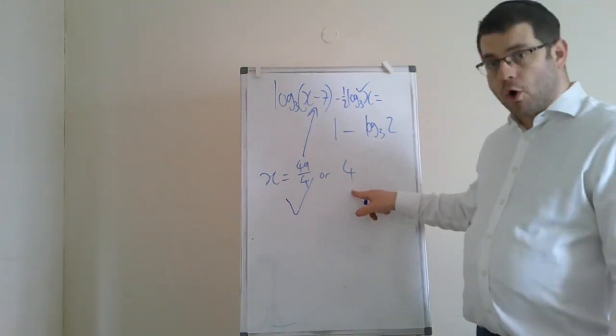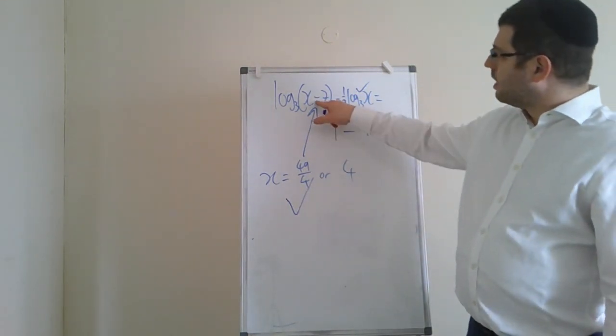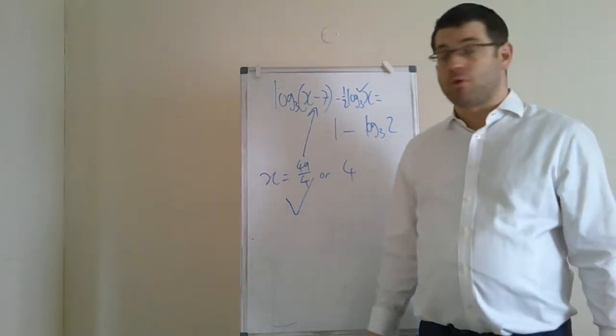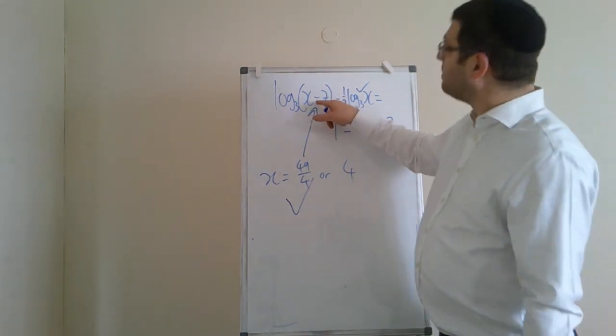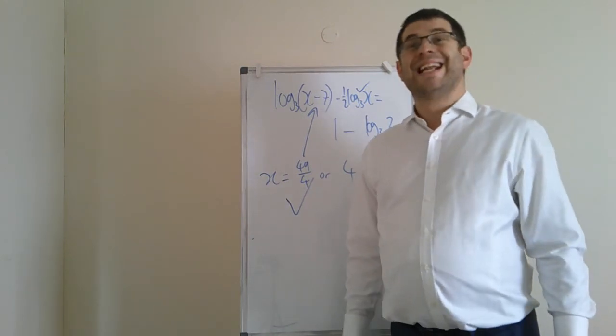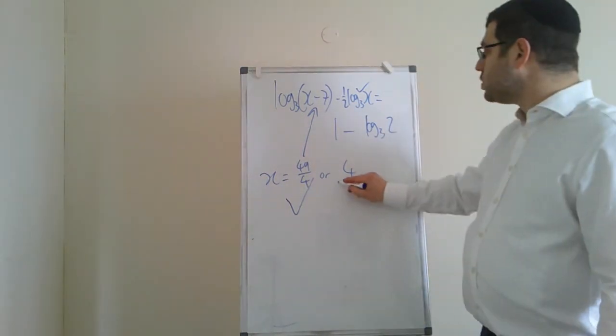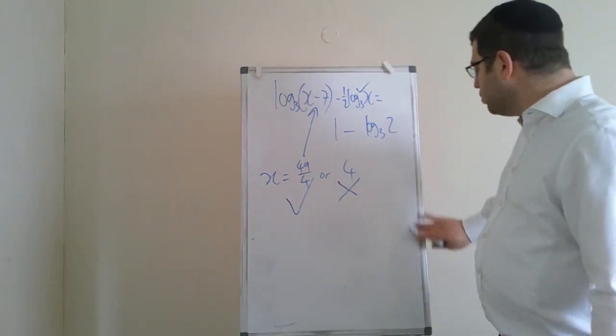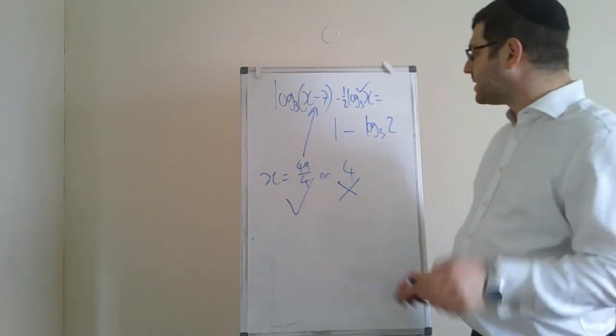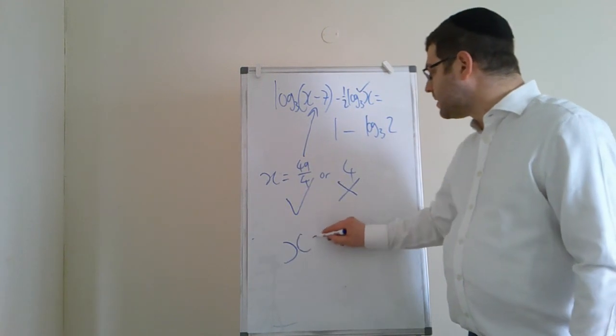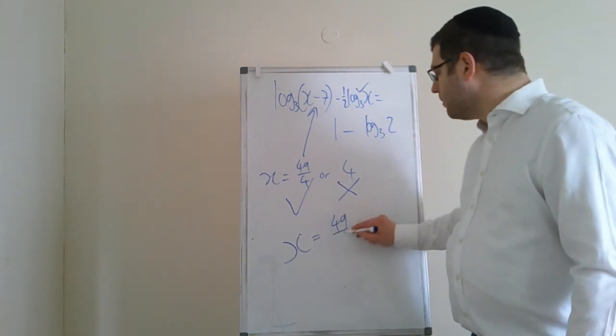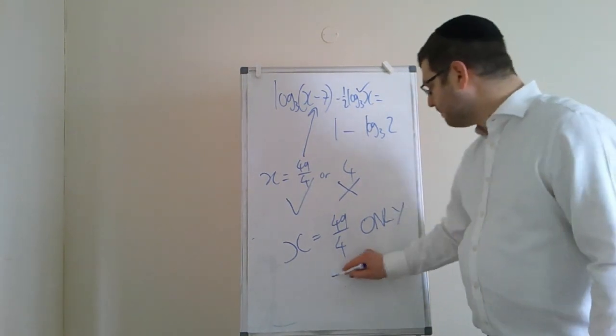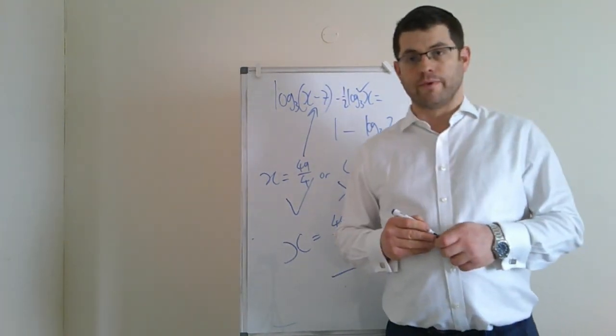However, when we put 4 in, it ends up being minus 3. So a positive answer can be a problem, because in this example, it makes the inside of that log negative. Therefore, 4 is not an answer. It is not a valid solution. So you will lose a mark unless you finally say that the solution is 49 over 4. You need to make it clear—only 49 over 4.